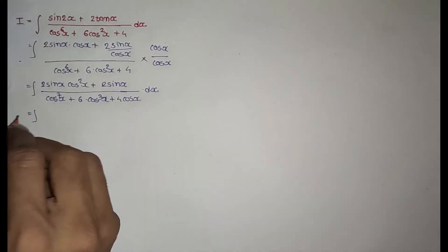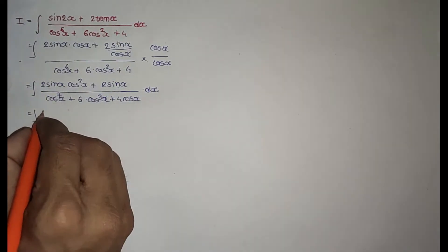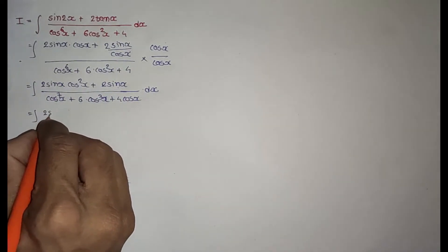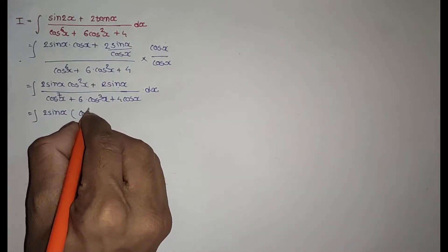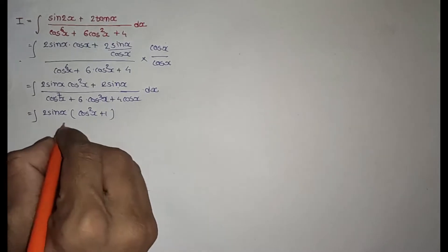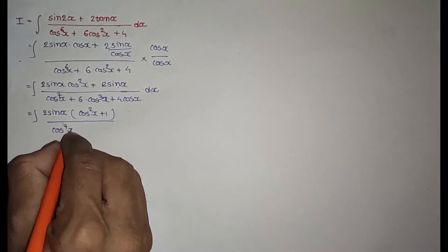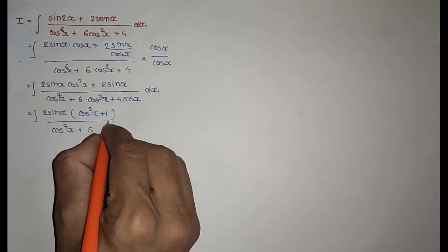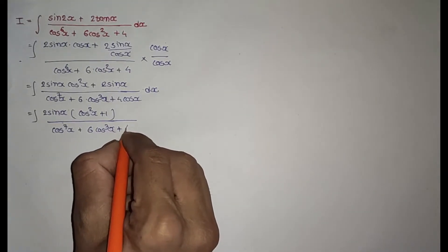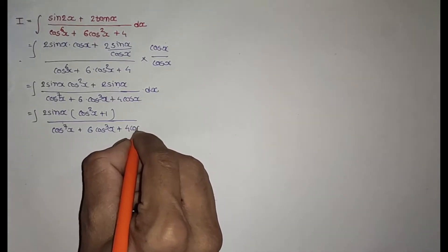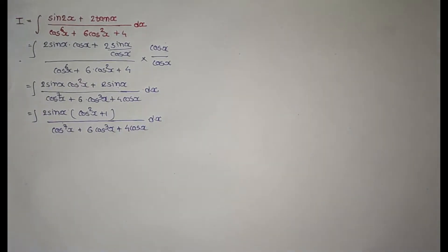Now, take sin x as common with 2. Then: 2 sin x times (cos²x + 1) divided by (cos^7 x + 6 cos³x + 4 cos x), dx.